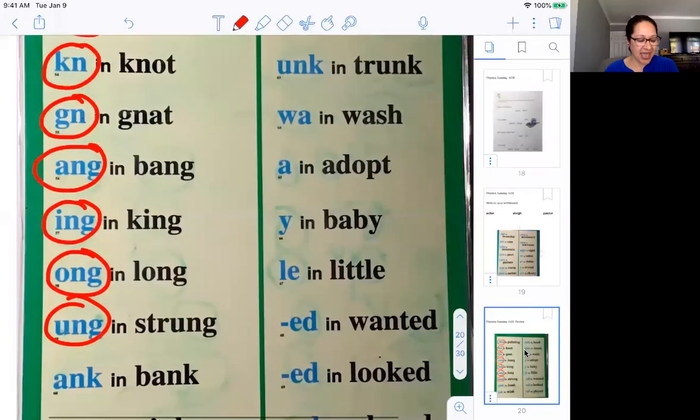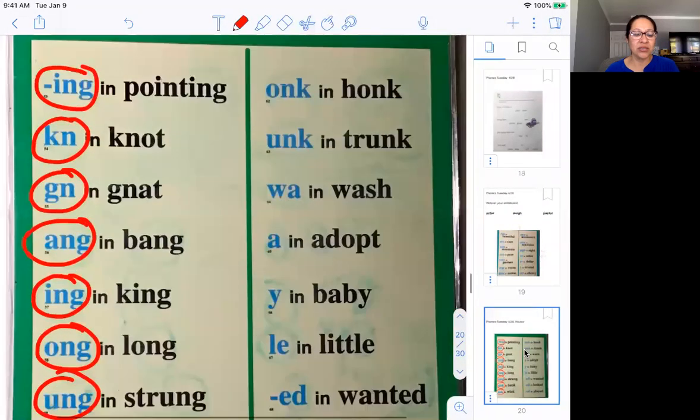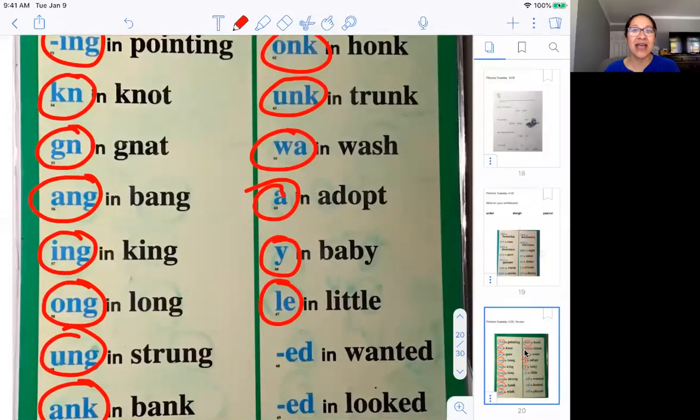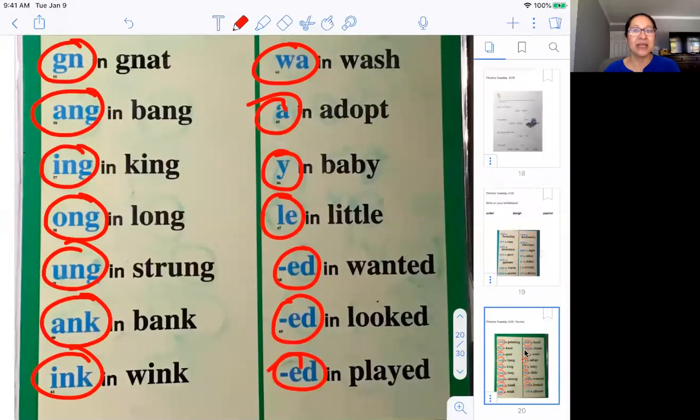Nk in bank, A-N-K. Onk in honk, O-N-K. Unk in trunk, U-N-K. A in wash, A. A in adopt, A. Y in baby, Y. Le in little, L-E. Ed in wanted, E-D. Ed in looked, E-D. Ed in played, E-D. Yay, you guys are awesome!